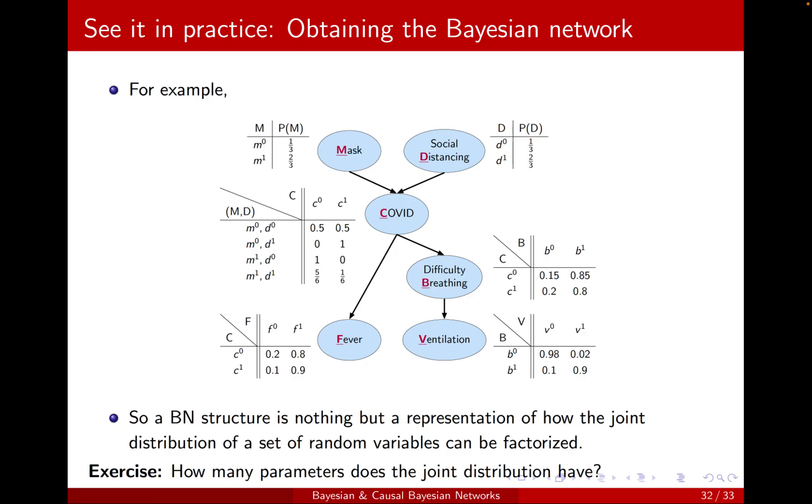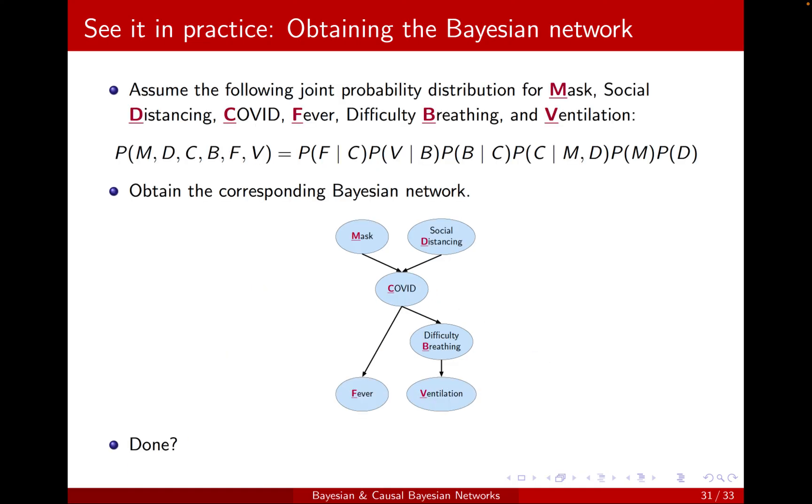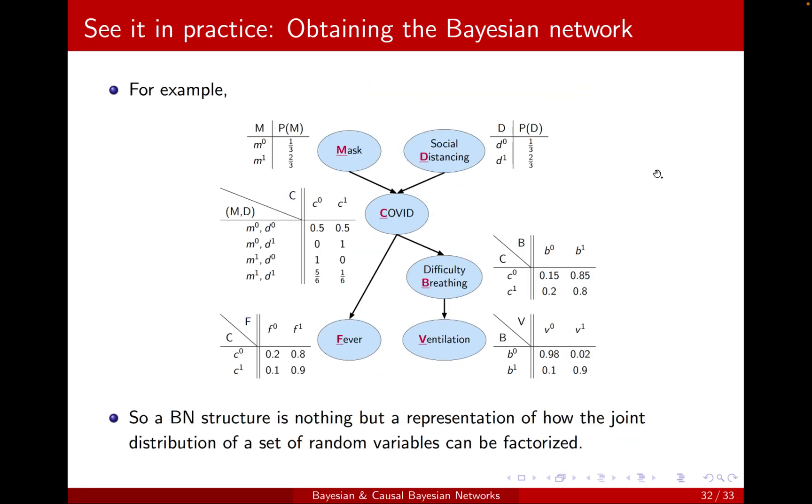A little example here, exercise: How many parameters does the joint distribution have? We have this joint distribution here. We may try to calculate the number of parameters. Recall that all the variables here are binary.